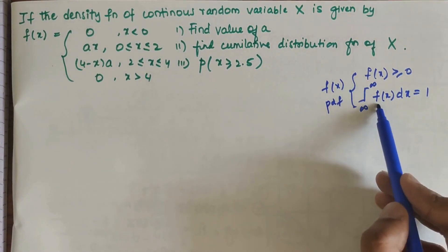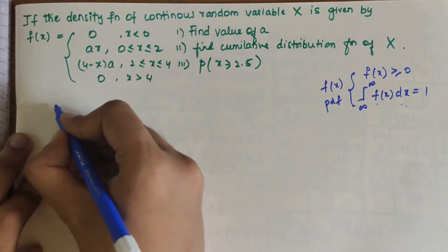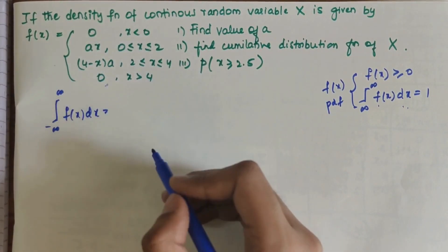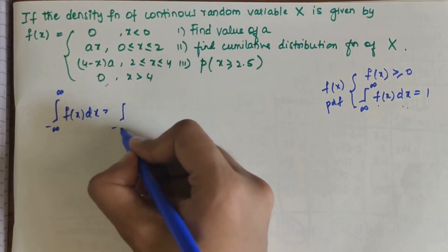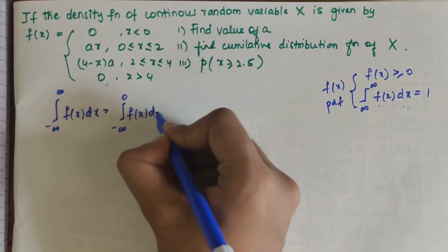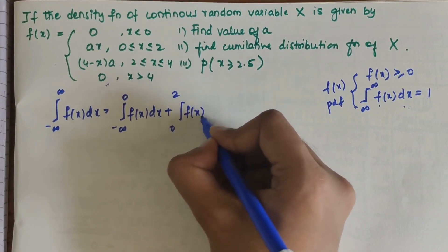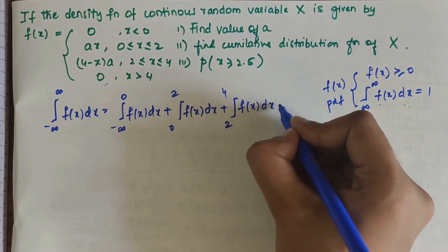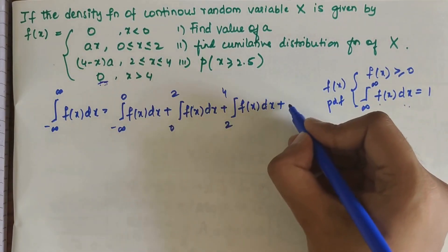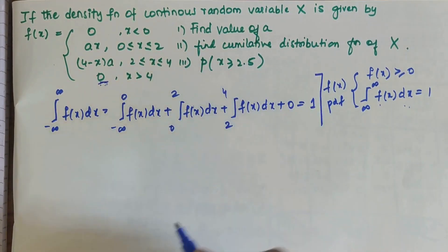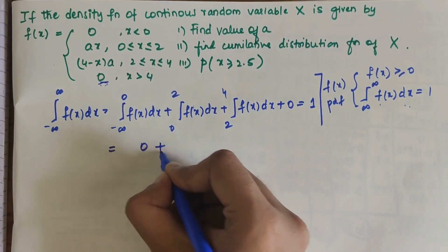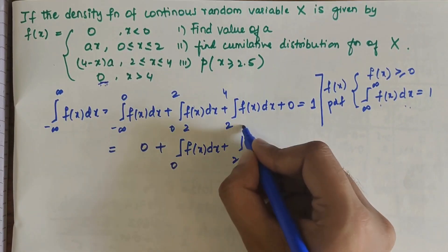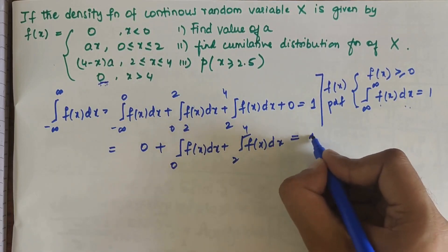Using the second law, we write the integral from minus infinity to plus infinity of f(x)dx as a sum of parts: from minus infinity to 0, plus 0 to 2, plus 2 to 4 of f(x)dx, all equal to 1. The first part is 0, so we get the integral from 0 to 2 plus 2 to 4 of f(x)dx equal to 1.